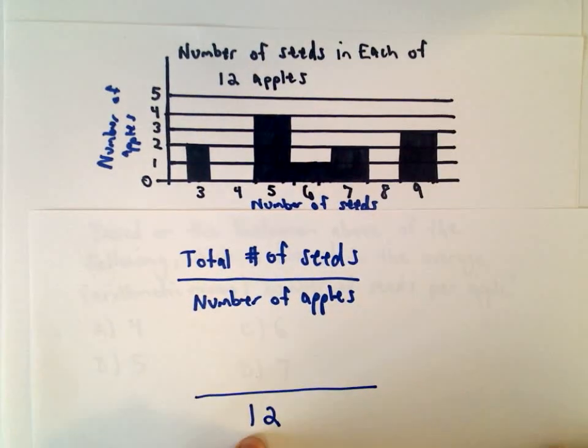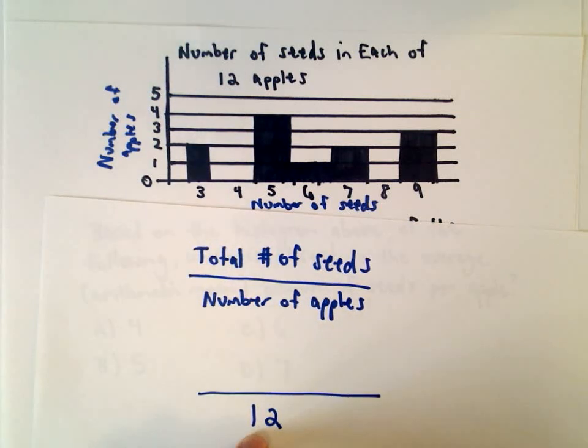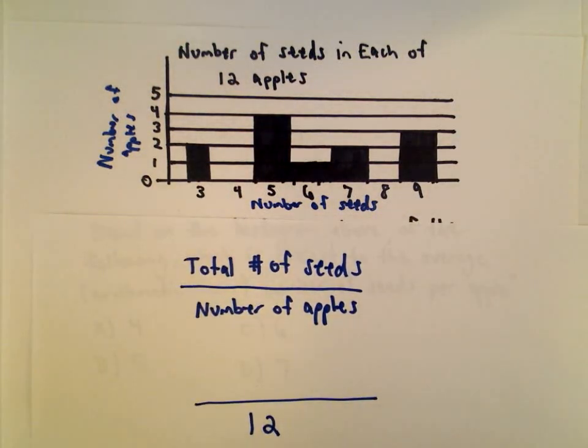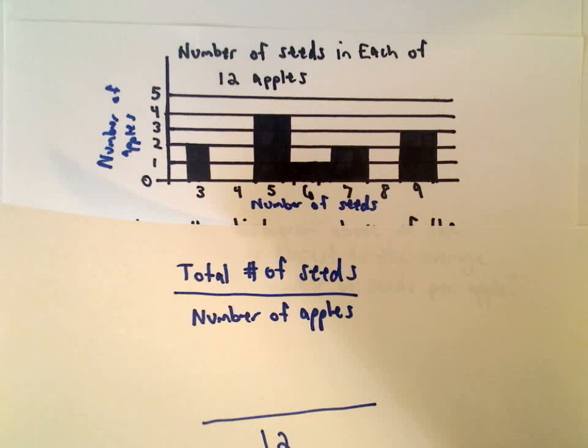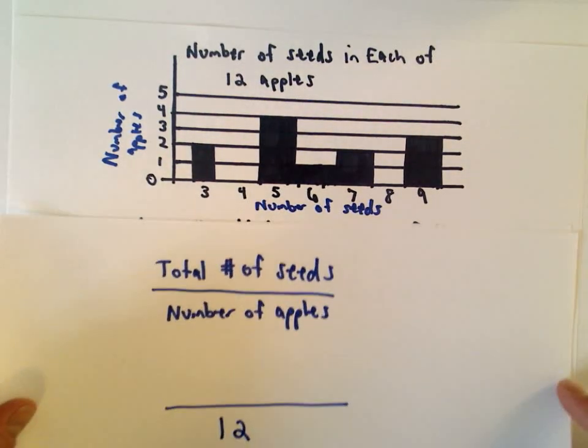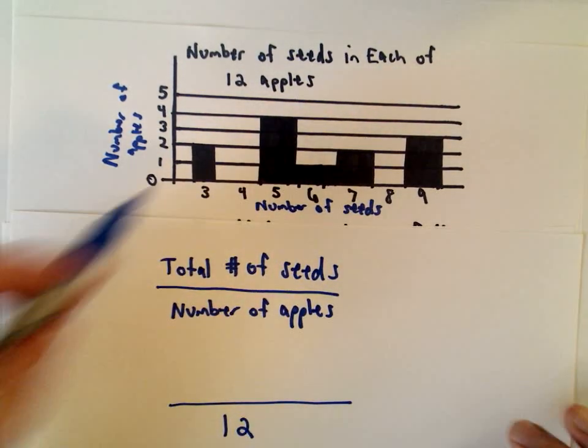We're told the number of apples, right? They tell us that's 12. So the thing I have to compute here is the numerator of this fraction, and that's going to be the total number of seeds.